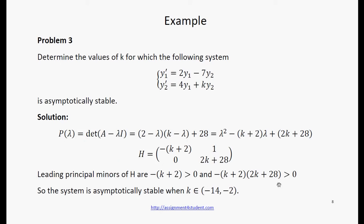According to Routh-Hurwitz criterion, they must be positive. Solving these two inequalities, we get the interval for K of asymptotic stability of the system from minus 14 to minus 2.